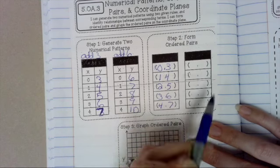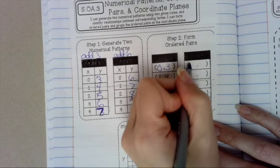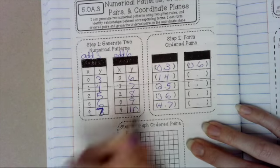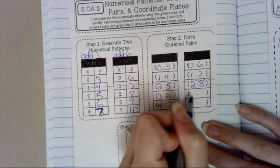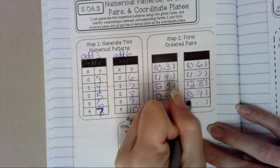Our second chart, our X is 0, our Y is 6. So 0, 6, 1, 7, 2, 8, 3, 9, and 4, 10.